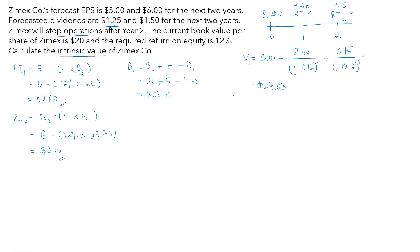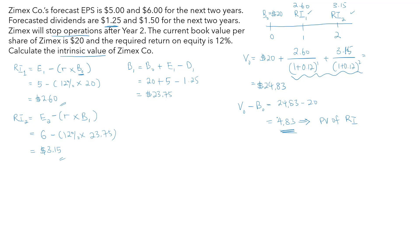Taking the intrinsic value minus the current book value per share: $24.83 − $20 = $4.83. This $4.83 represents the present value of the residual income expected from the company — the PV of those two residual income figures. A positive difference between intrinsic value and book value indicates we expect positive residual income in the future, which adds value to the company's intrinsic value per share.